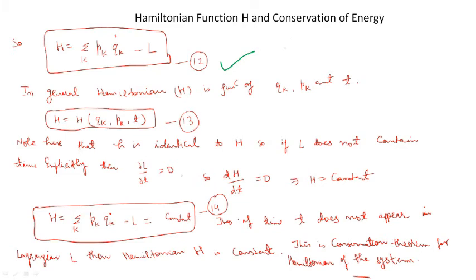As we know that L is a function of Qk, Qk-dot, and T; similarly, capital H is a function of Qk, Pk, and T. From equations 8 and 12, you can see that small h is identical to capital H. Similarly, if the Lagrangian does not contain time explicitly, then ∂L/∂T = 0, and so for capital H, d(capital H)/dT = 0, meaning capital H is constant. Therefore, capital H = Σk Pk·Qk-dot − L = constant. This means if the Lagrangian of a dynamical system is not explicitly time-dependent, then the Hamiltonian of the system is constant, and this is known as the conservation theorem — a very important result.